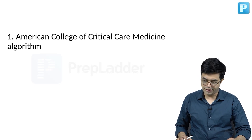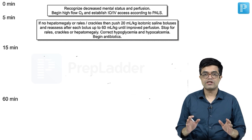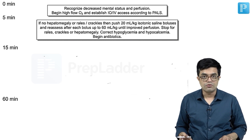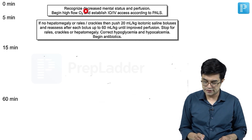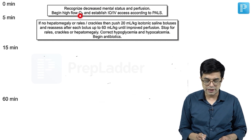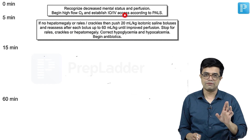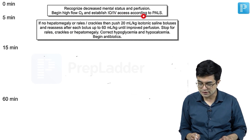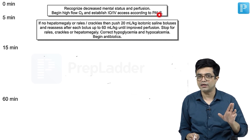Let us talk about the American College of Critical Care Medicine algorithm. This is what the algorithm says regarding management within the first hour. Whenever a child presents with clinical features of septic shock, you will first recognize the decreased mental status and perfusion. You will begin high-flow oxygen in all these children and establish vascular access — intraosseous or intravenous access according to PALS. This algorithm corresponds to the PALS guidelines.